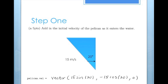The first objective is to add in the initial velocity of the pelican as it enters the water. We know that the pelican comes in at an angle of 20 degrees, so we can make a right triangle to help see these values. We also know that the hypotenuse of this triangle, the initial start speed of the pelican, is 15 meters per second.